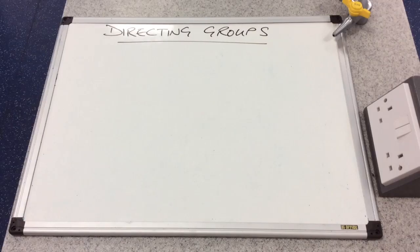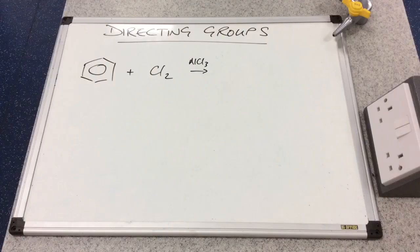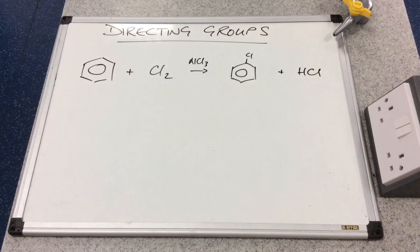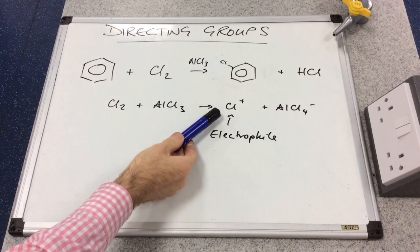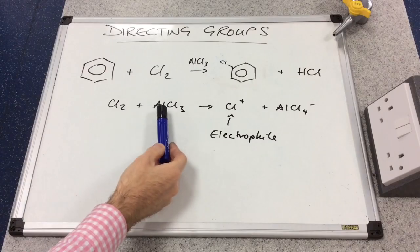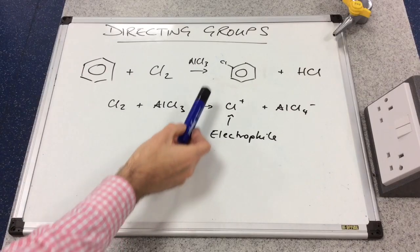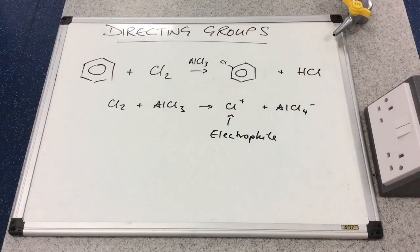In this video I'm going to look at directing groups. If we start by considering the reaction between benzene and chlorine in the presence of a halogen carrier catalyst such as AlCl3, the electrophile produced can attack any of the carbons on the benzene ring because they are all the same — they are all equivalent.